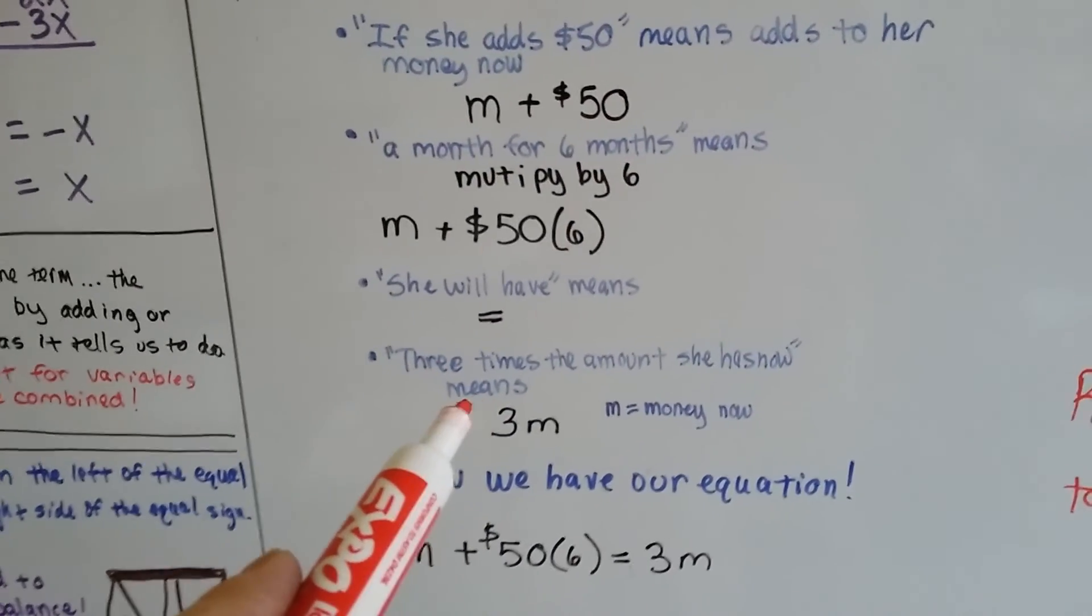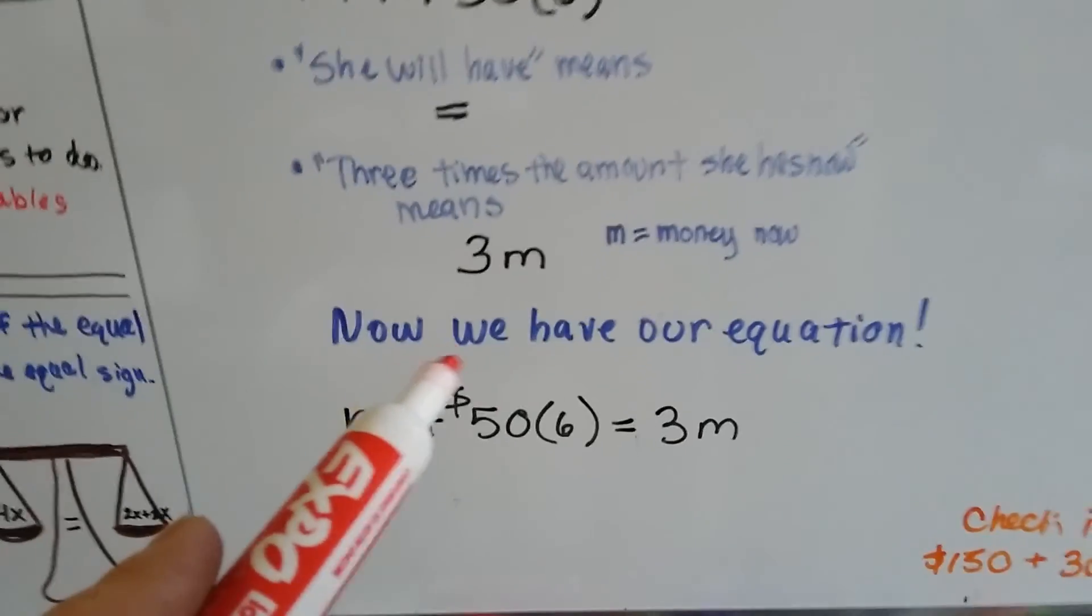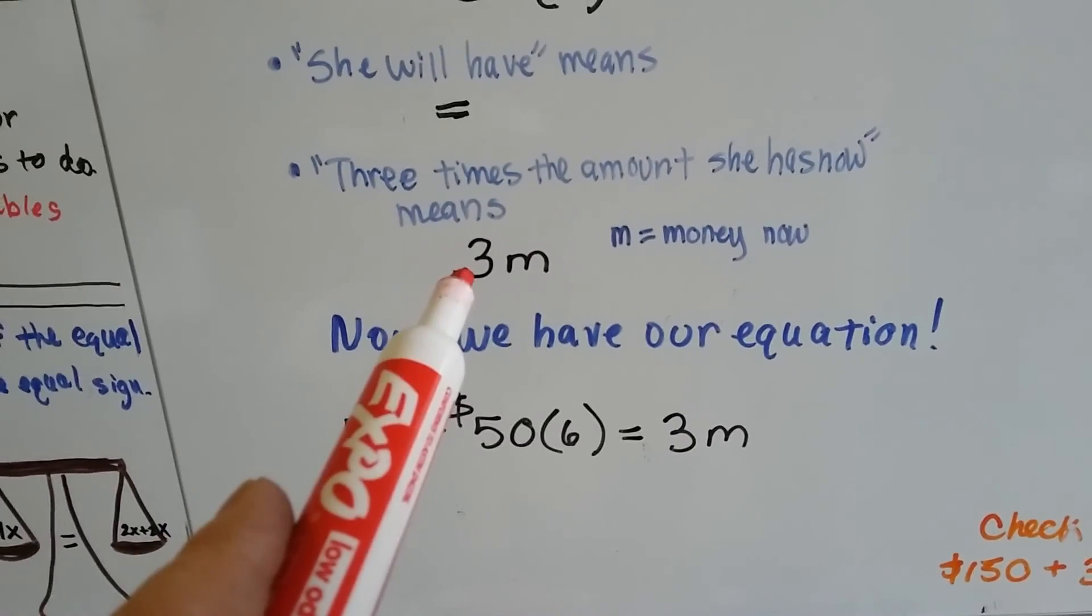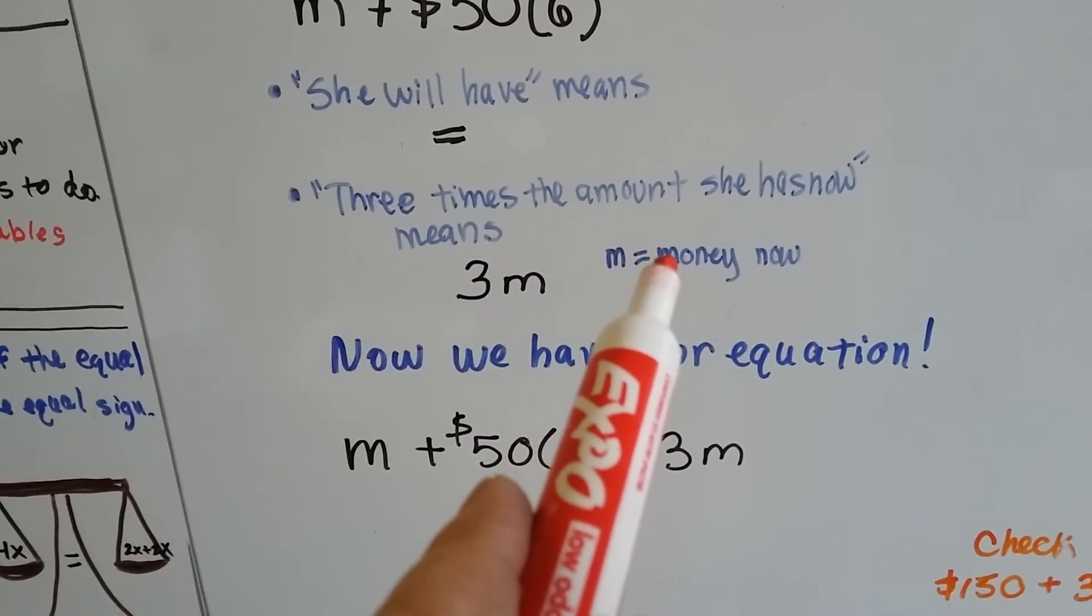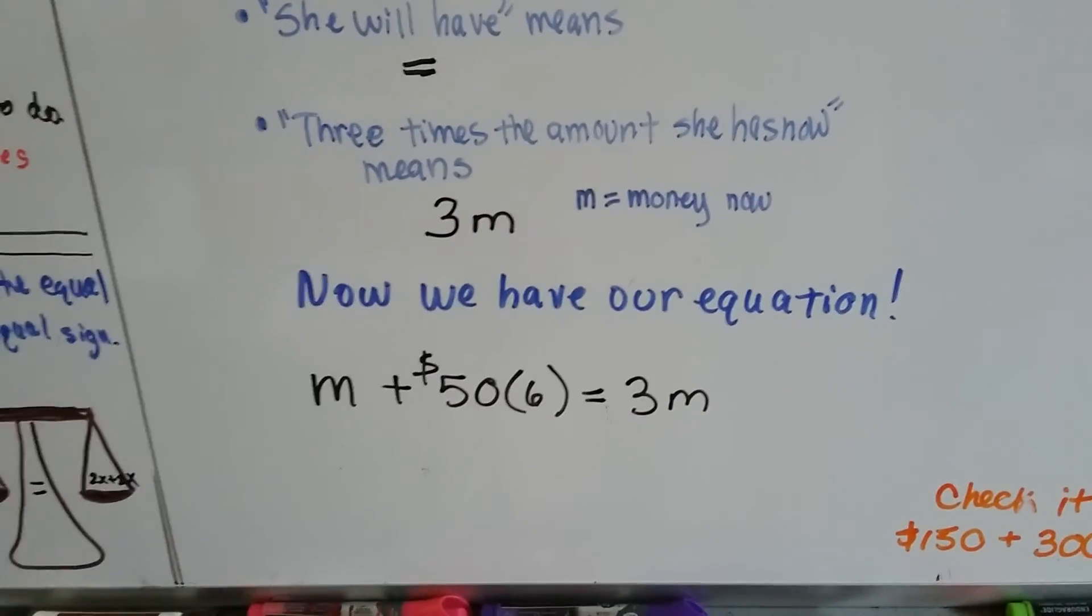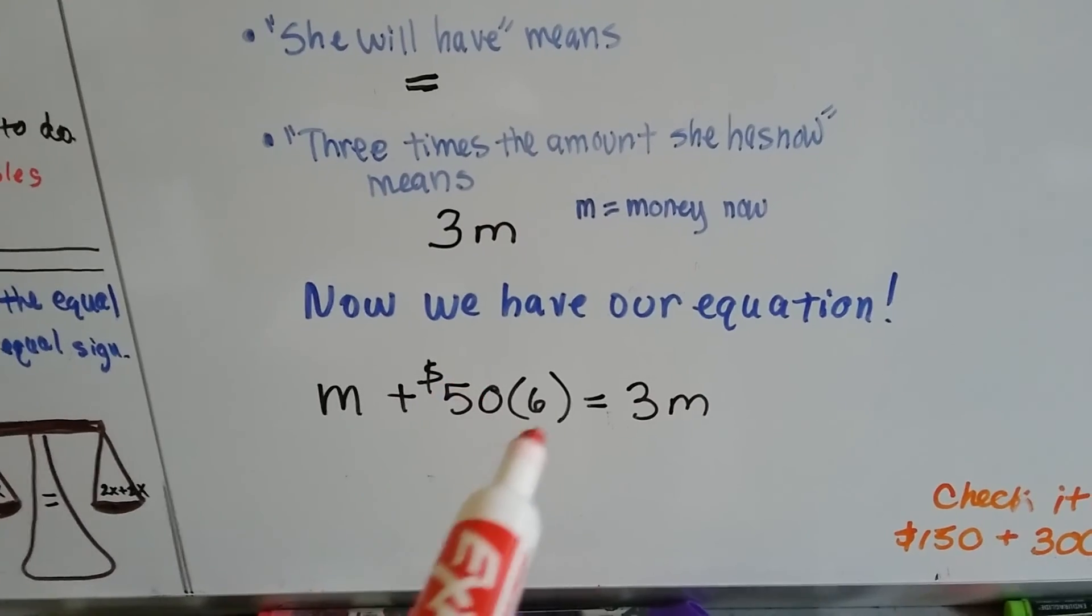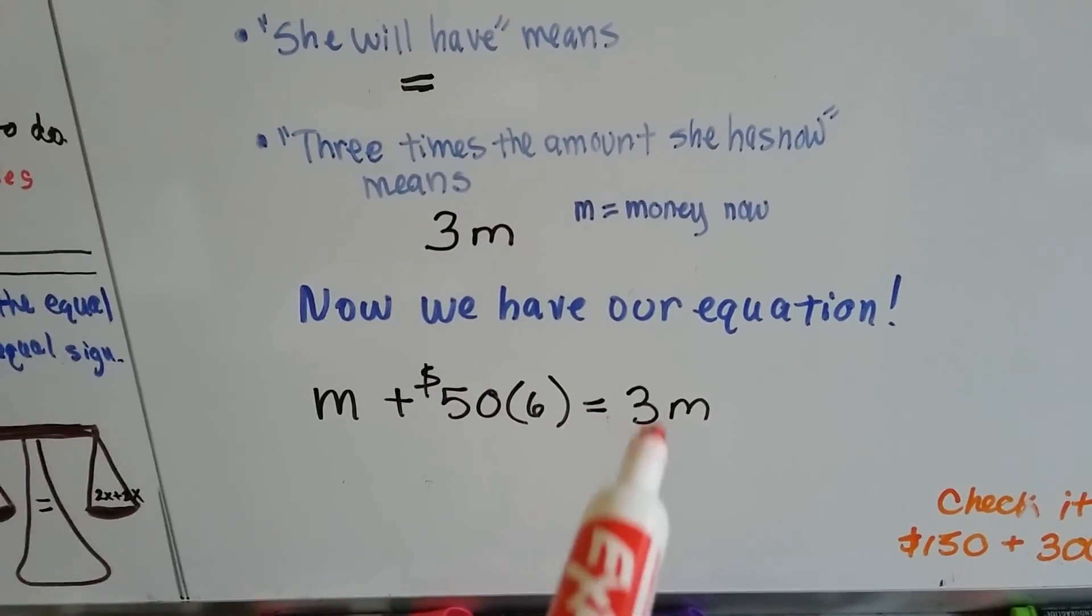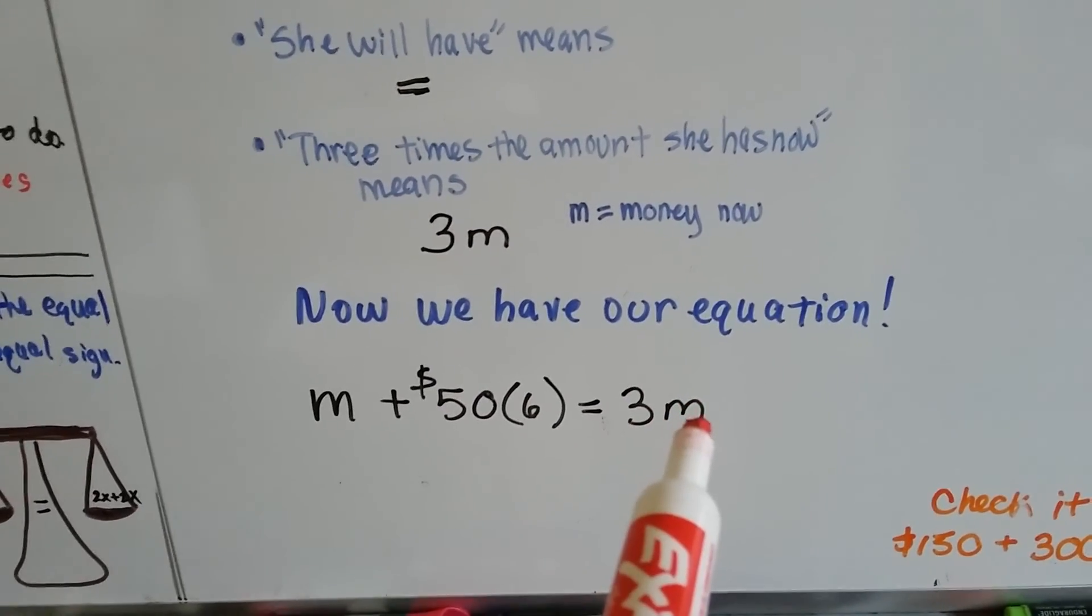But it says, three times the amount she has now. So it's going to equal three times the amount she has now. We know it's three times. And if the M means money now, it's 3M. Now we have our equation. We've got M plus the $50 for each 6 months. And it equals three times the money she has now.